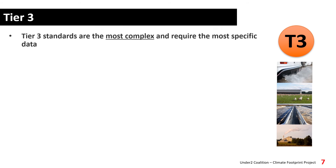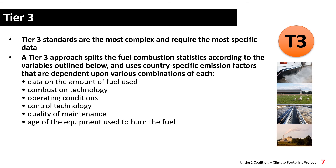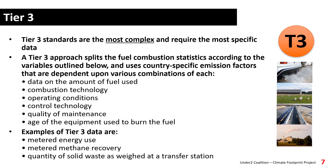And finally, tier 3, which is the most complex and requires the most specific data. A tier 3 approach will use emission factors and split fuel combustion statistics according to a series of variables, including the fuel used, the combustion technology, the operating conditions, the control technology, the quality of maintenance, and the age of the equipment used to burn the fuel. Examples of the types of data for which you may calculate emissions using a tier 3 method include metered energy use, metered methane recovery, or the quantity of solid wastes as weighed at a transfer station.